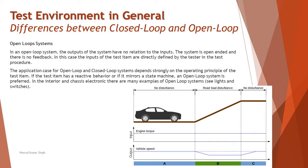In zone B, an inclination occurs which is considered a road load disturbance. The positive gradient acts as a disturbance on the system. The driver does not change the accelerator pedal position, so the input torque remains the same. Due to the road gradient, an additional opposing force acts on the vehicle, causing a slowdown. The driver did not adjust the engine torque as a function of the vehicle speed drop — the road gradient is a disturbance. In zone C, since the inclination is gone, the speed returns to normal.